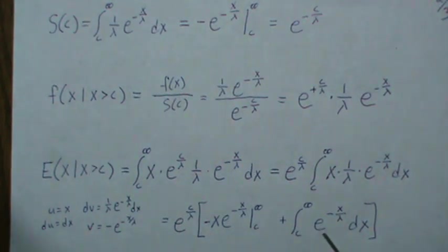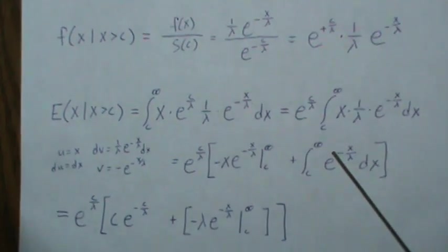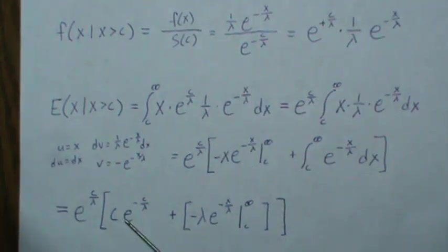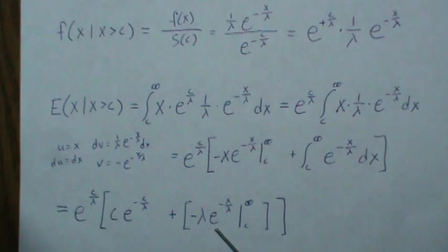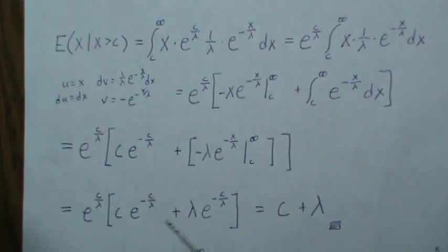Then this becomes that, we integrate that, becomes this, and there's our limits, plug them in that becomes zero to infinity. So plug it in, we multiply that in and those go away and we're left with C plus lambda.